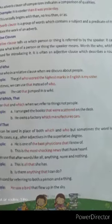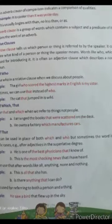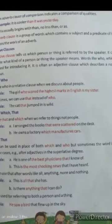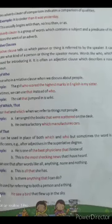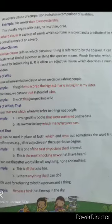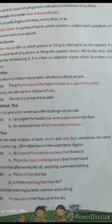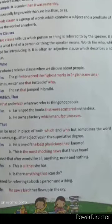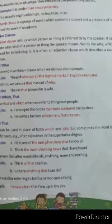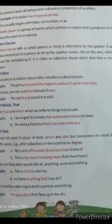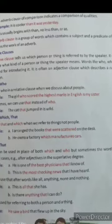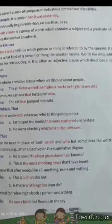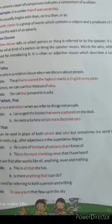Now we come to relative clauses. So far we have learned about noun phrase, noun clause, adjective phrase, adjective clause, adverb phrase, and adverb clause. A relative clause tells us which person or thing is referred to by the speaker. It can also indicate what kind of person or thing is meant. Words like who, which, and that are used to introduce it. It is often an adjective clause which describes a noun or a pronoun.